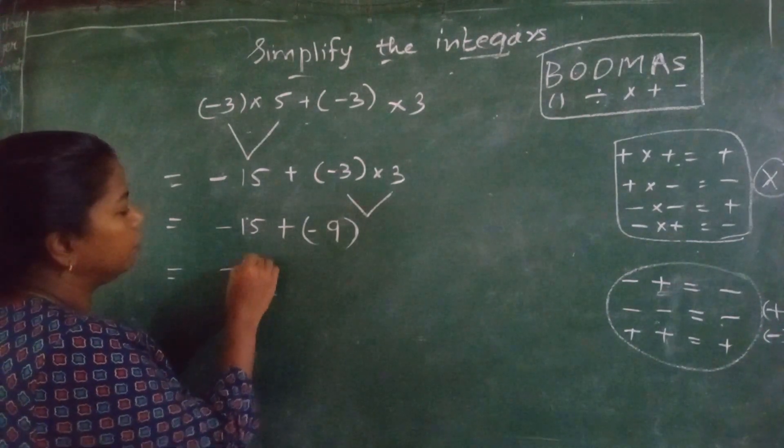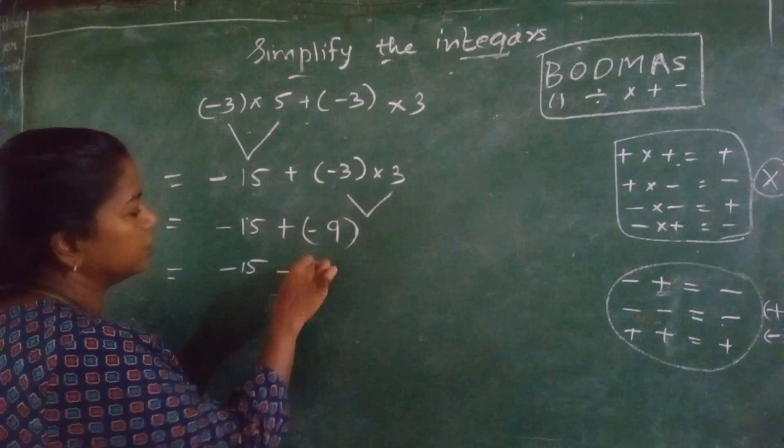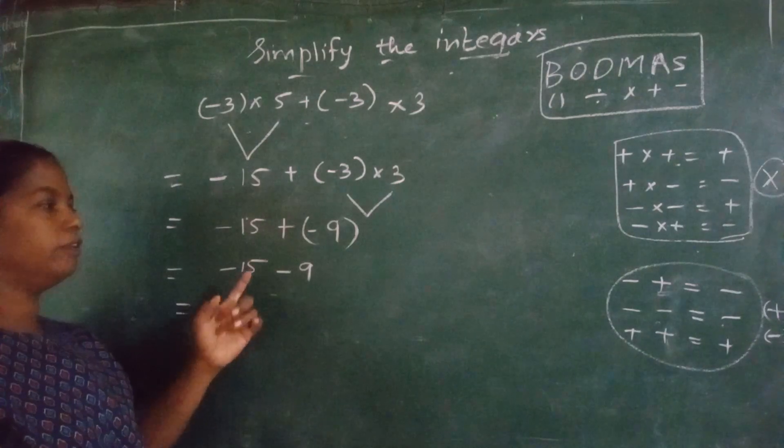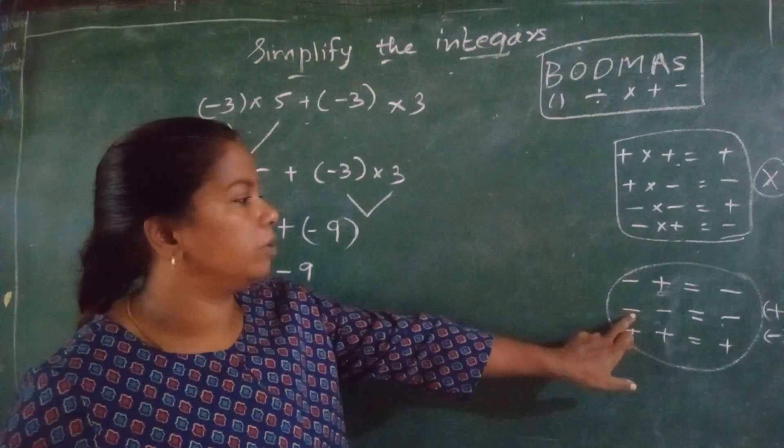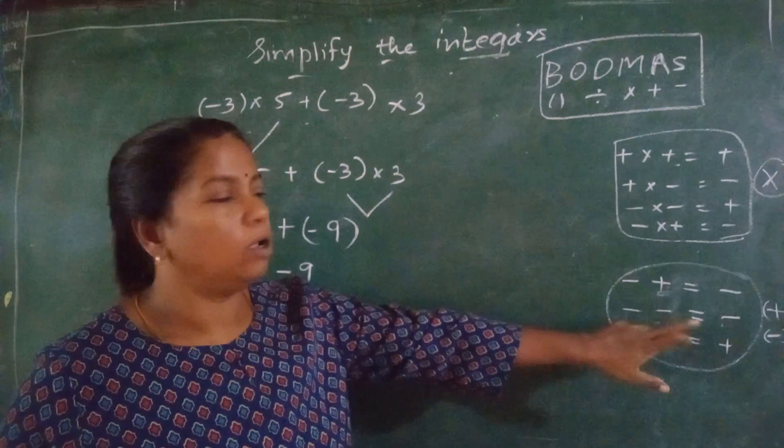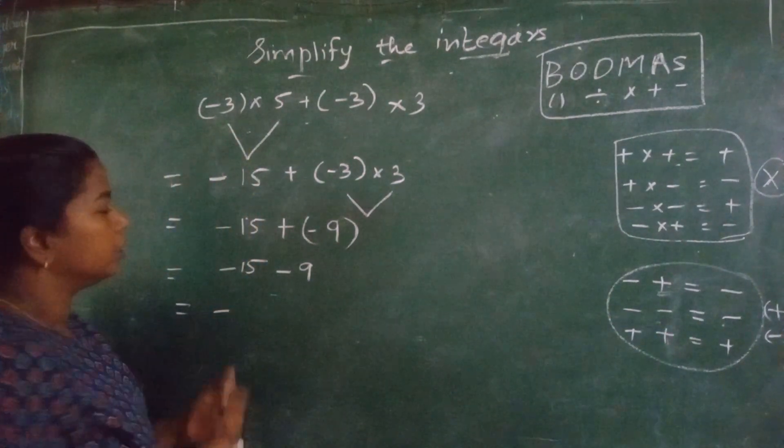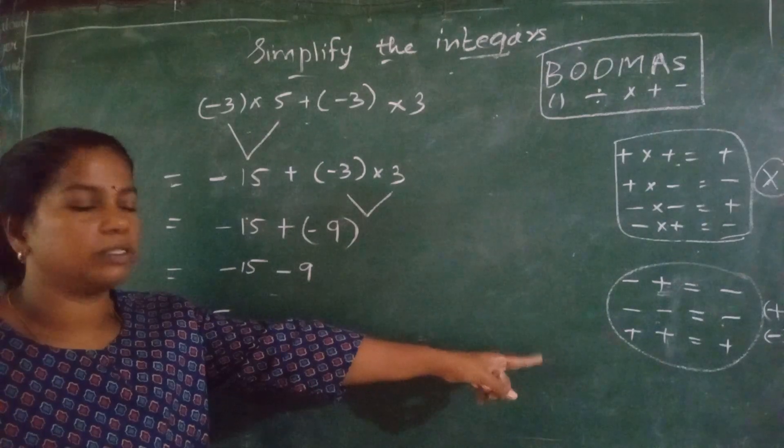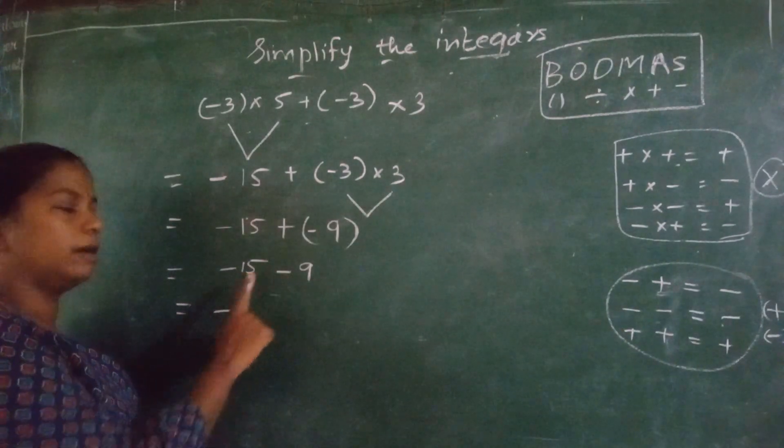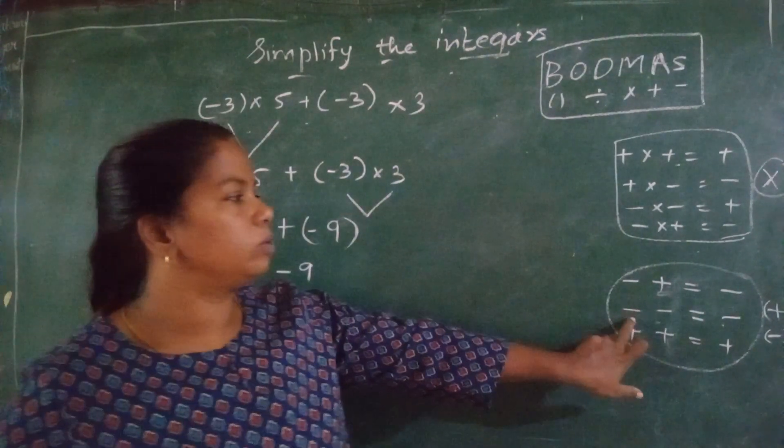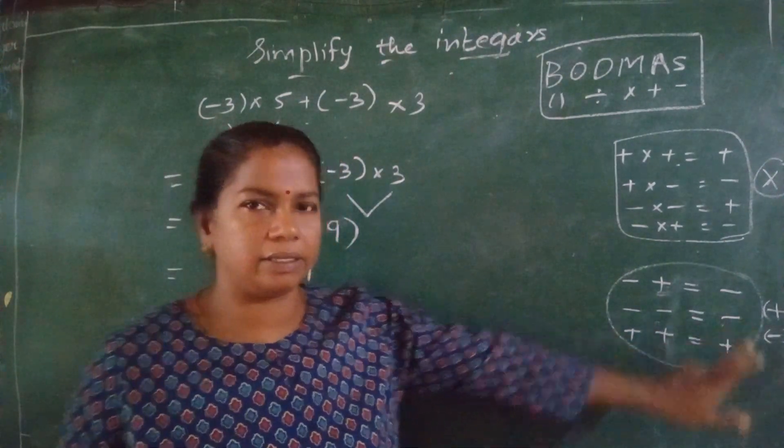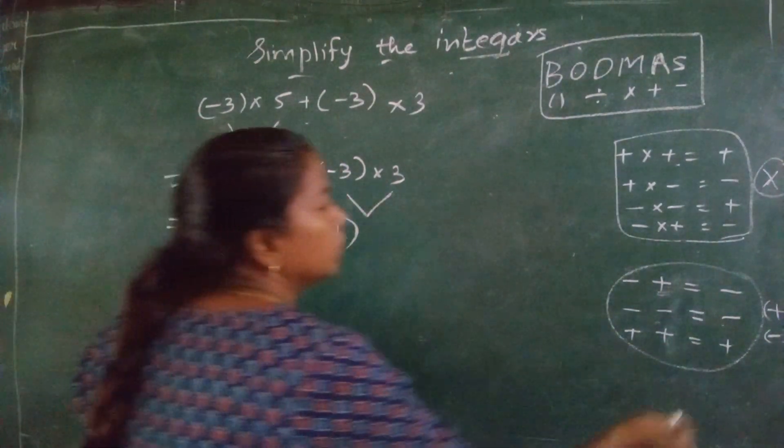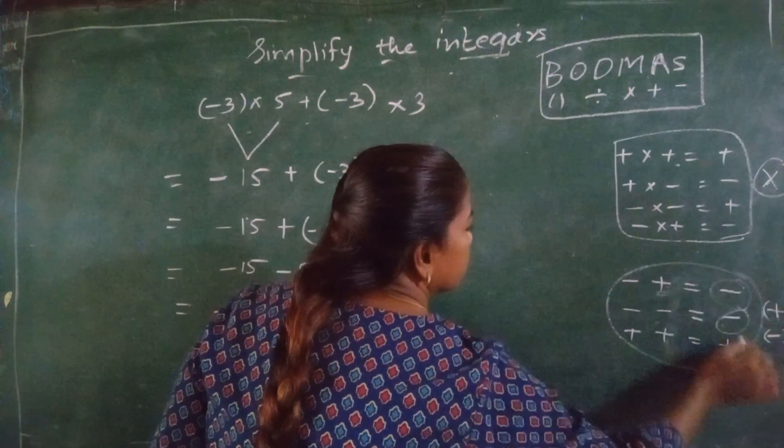Now, minus 15, open the bracket, minus 9. Minus 15, minus 9. Two same sign came. When two same sign come, put the same sign. Here, you will not use the multiplication rule. You will use the addition and subtraction rule. When two same sign come, put the same sign. Two same sign came, put the same sign and subtract it. What you have to do? You have to follow these operations.